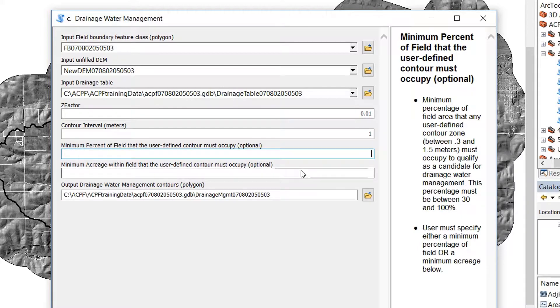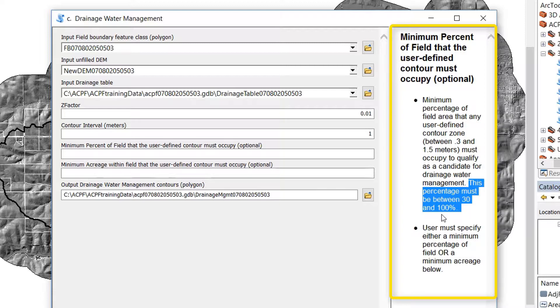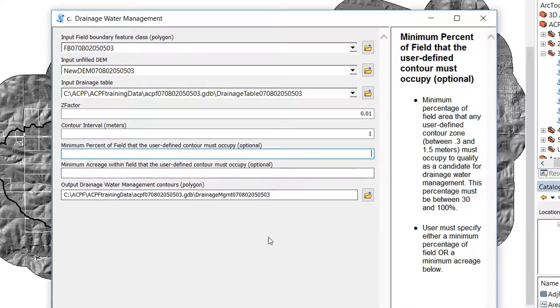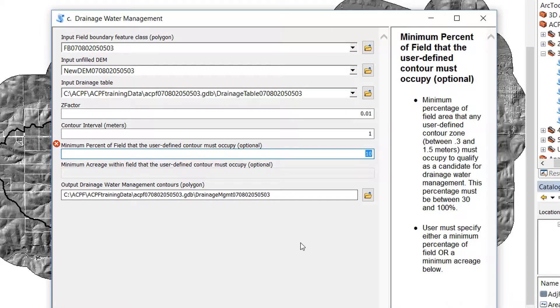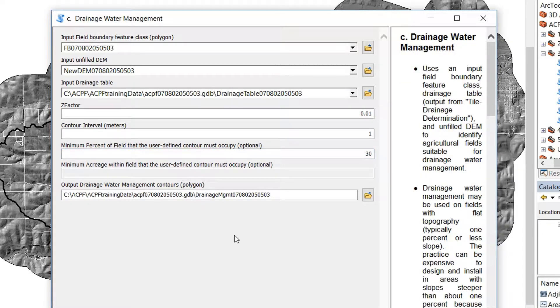You can see over in the tool help, it tells you that this percentage must be between 30 and 100 percent. This is a recommendation. But if you try to put in a value, say only 10 percent of the field, it says nope, that's not going to work. You're outside of this range. But I am going to go with the minimum value of 30 percent.